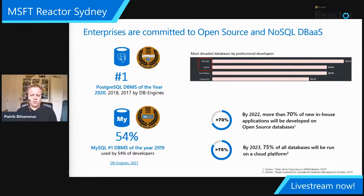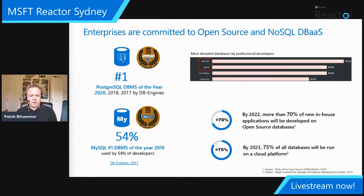Interestingly, Couchbase and Cassandra are popping up on the dreaded databases list. My personal theory is that when you're using NoSQL for big data, large Cassandra clusters become painful to manage operationally. That's where database-as-a-service or a PaaS offering has a lot of value to add — removing as much operational burden as possible while still allowing you to scale and build applications the way you need.